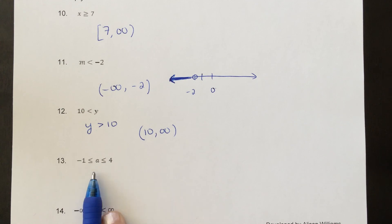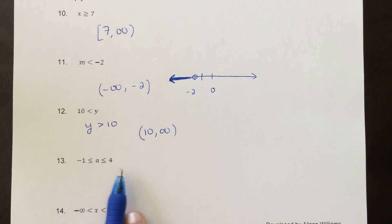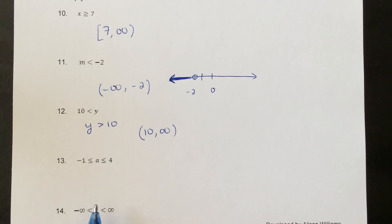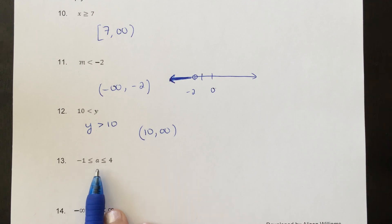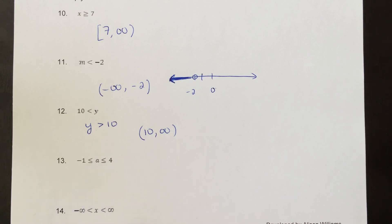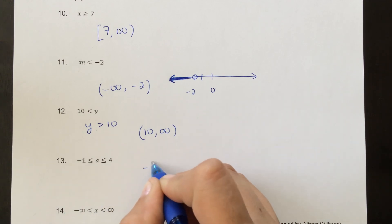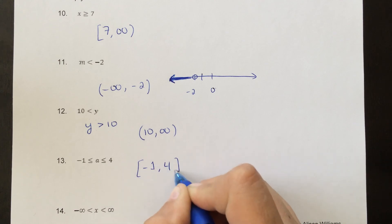This compound inequality says a is bigger than or equal to negative 1, and a is less than or equal to 4 — both must be true simultaneously. A number that could work is 0, since it's bigger than negative 1 but smaller than 4. We could also plug in 2 or even 4, since 4 is less than or equal to 4. So it's all the numbers between negative 1 and 4, and we include both endpoints.